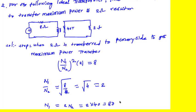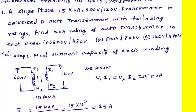So 80 primary turns are required to transfer maximum power from the primary side to the 2-ohm resistor on the secondary side. We have seen how to convert a two-winding transformer into an auto transformer with a specified voltage rating and its kVA rating, and the conditions to be satisfied to transfer maximum power from primary to secondary.